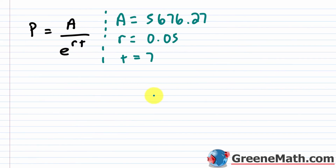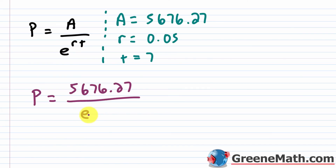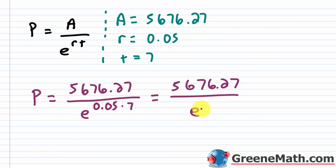Be really careful when keying this into a calculator. If you're using a TI-83 or similar, I recommend computing r times t first: 0.05 times 7 equals 0.35. Then key in 5,676.27 divided by e raised to the power of 0.35. If instead you key in 5,676.27 divided by e to the power of 0.05 times 7 without parentheses, the calculator will evaluate e^(0.05) first due to order of operations, then divide, then multiply by 7 — giving you the wrong answer.